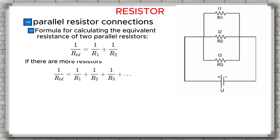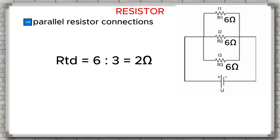If there are more resistors, we simply add more terms. Special case: if all the resistors have the same value, the equivalent resistance is the value of one resistor divided by the number of resistors. For example, imagine we have three resistors each with a value of 6 ohms connected in parallel. Step 1 — apply the special case formula for equal resistors: take the value of one resistor, which is 6 ohms, and divide it by the number of resistors, which is 3. 6 divided by 3 gives us 2 ohms. So the equivalent resistance of this parallel circuit is 2 ohms.